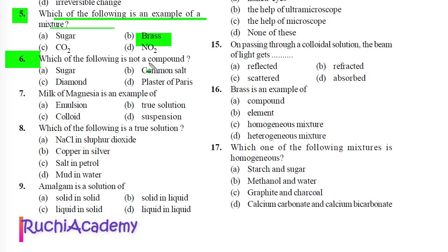Question 6: Which of the following is not a compound? A) Sugar, B) Common salt, C) Diamond, D) Plaster of Paris. Correct answer is Diamond, because diamond is a pure substance made up of only carbon.